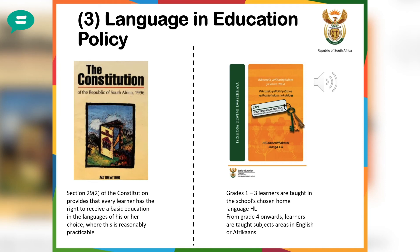In education, two key documents guide education policy implementation. The first is our constitution. Because language was used historically as a key instrument of division, it was very important that language be readdressed in the new South Africa for reasons of nation building, identity, and culture. The constitution basically states that every learner has the right to receive a basic education in the language of his or her choice, where this is reasonable — directly readdressing the limited home-language access learners had during apartheid.